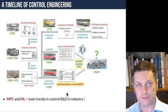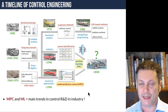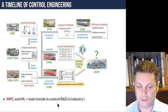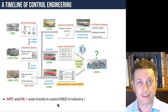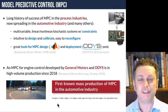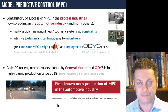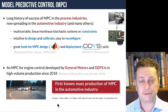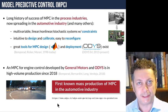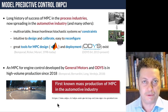Now machine learning has become very popular and is going to have another impact on how we design control systems. The main trends in R&D in controls in industry are MPC and machine learning. MPC has a long history of success in process industries starting in the 1980s, with thousands of successfully implemented applications, and it is now spreading to other industries like automotive.